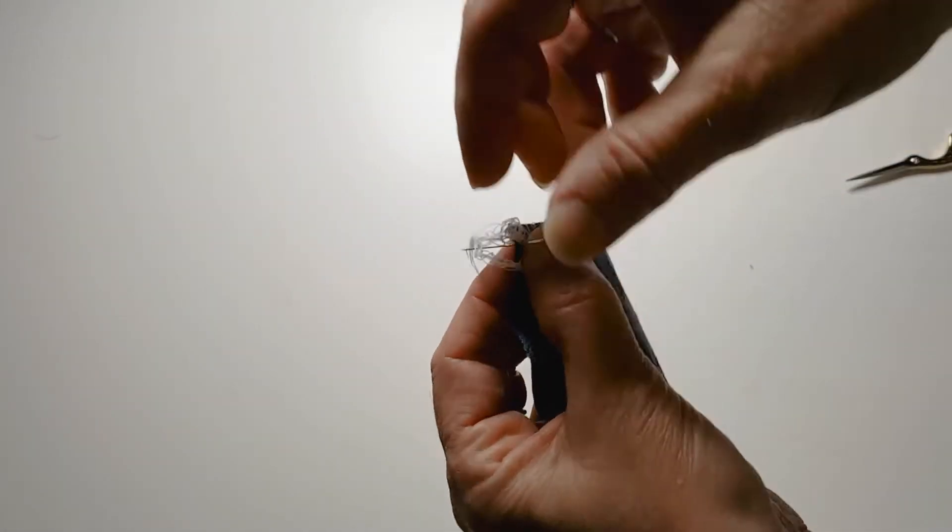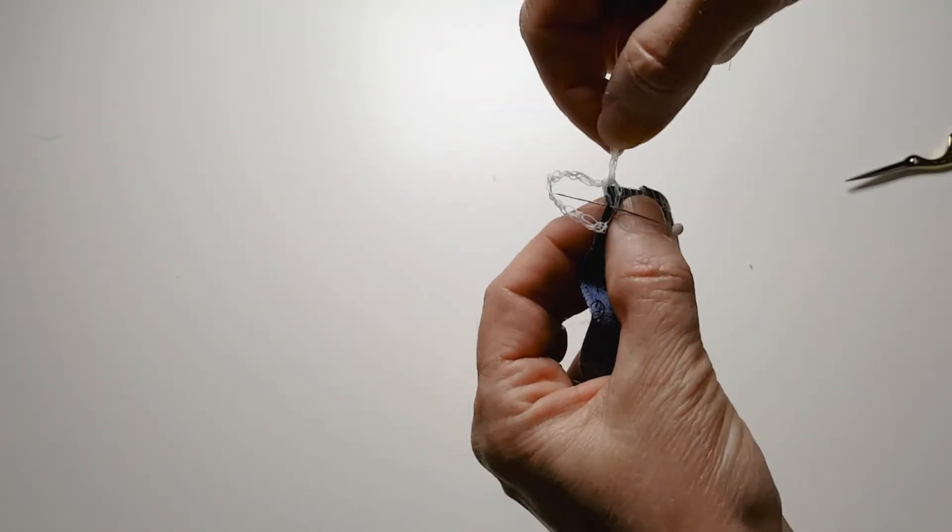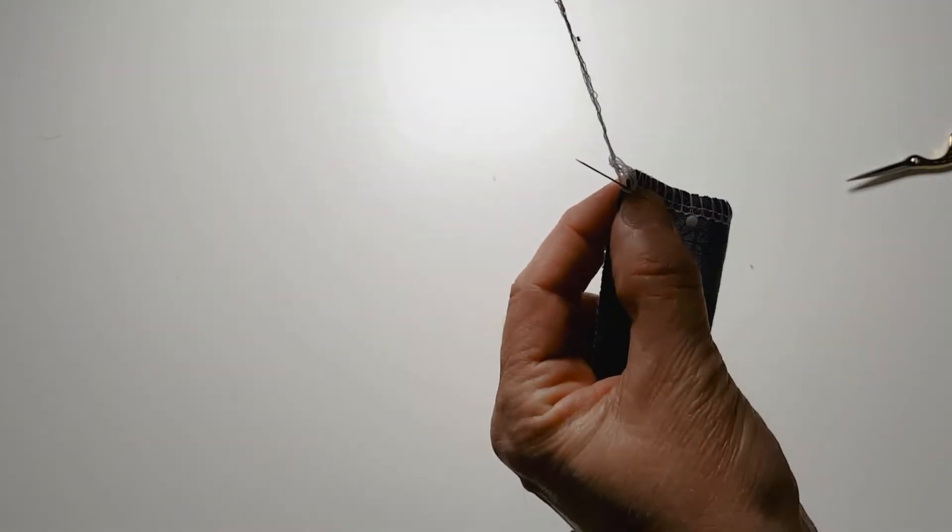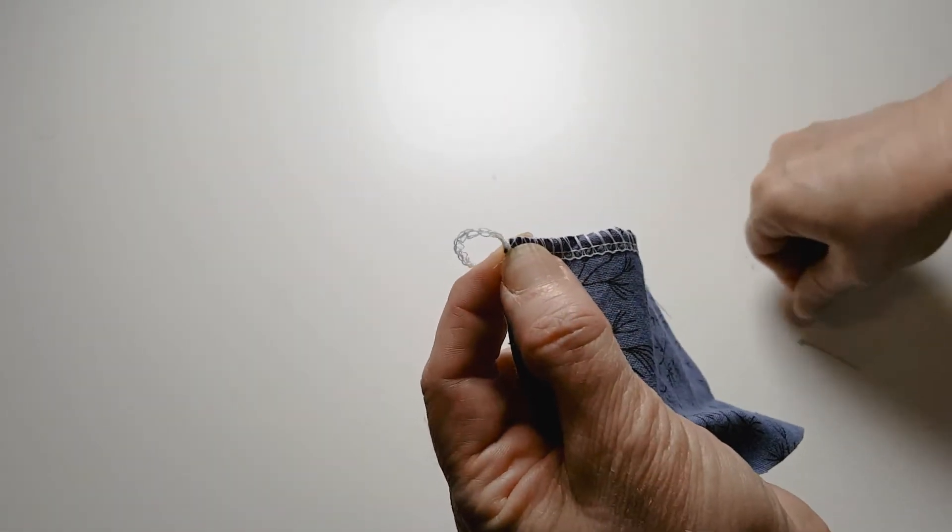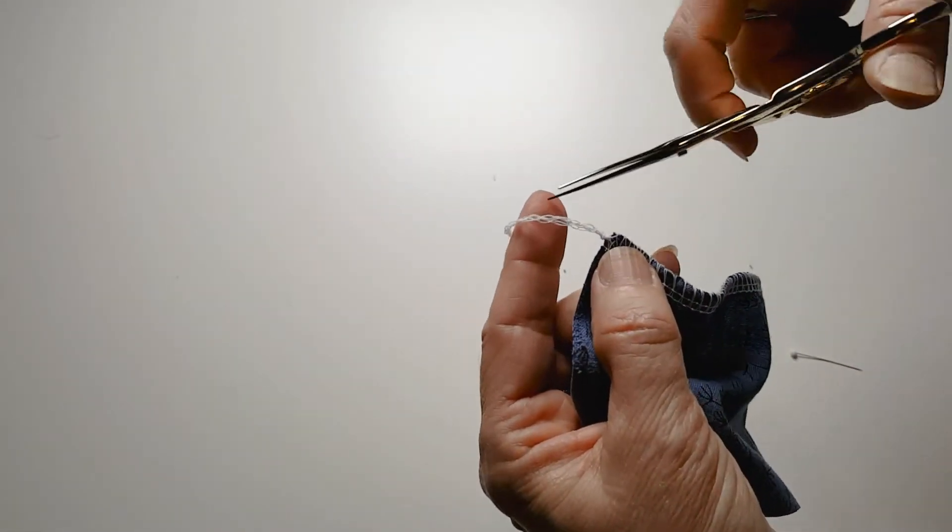Put the pin where you want the knot to be, and then you pull and the knot will go right to that point where the pin is. That's nice and close to the end.